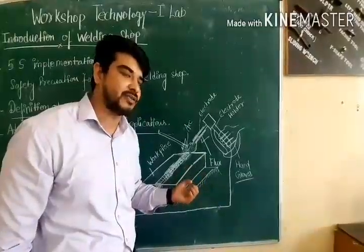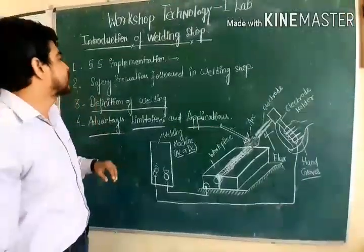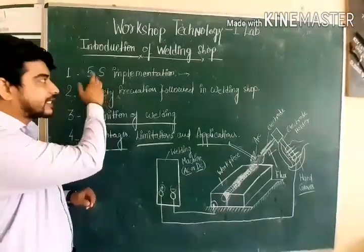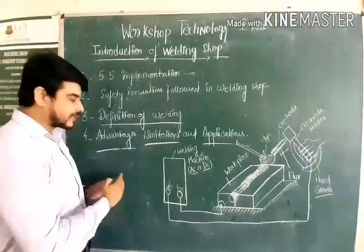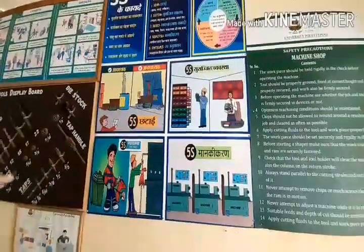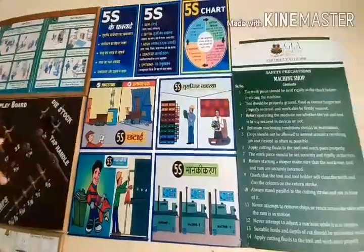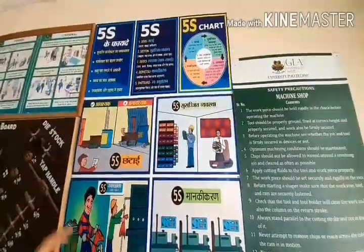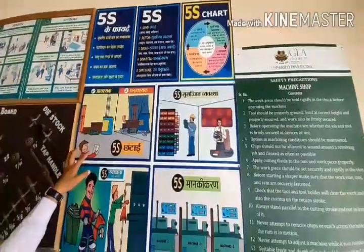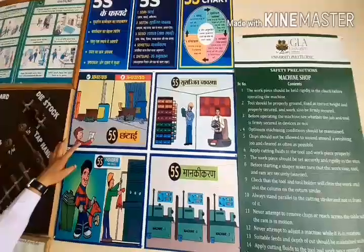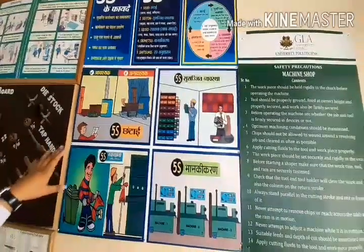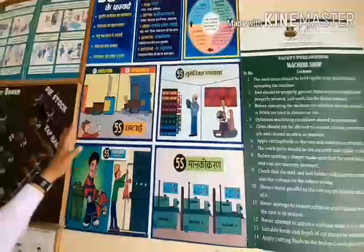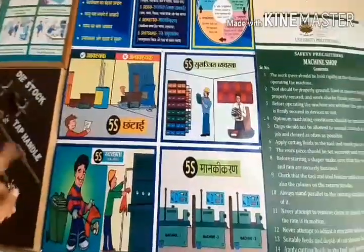So these are some contents which we will discuss in this video. First of all, we will study 5S Implementation. The first S is Sorting. Sorting means we separate useful products — those we will use during processing or manufacturing — from un-useful products, which we set aside and discard.